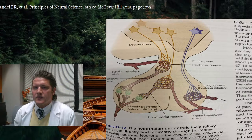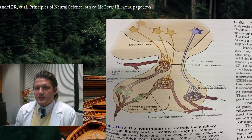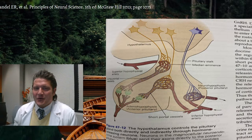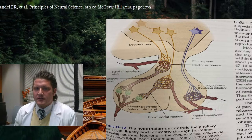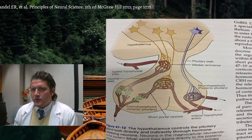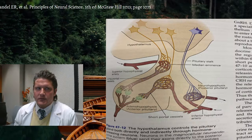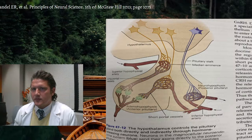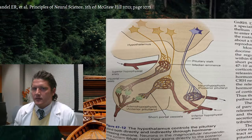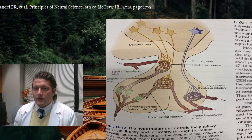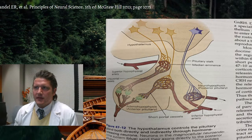Here I have a diagram of the pituitary from the Principles of Neuroscience, fifth edition. You can see there are two portions: the anterior pituitary, referred to as the adenohypophysis, and the posterior pituitary, referred to as the neurohypophysis. The anterior pituitary is responsible for hormones involved with prolactin, growth hormone, your adrenal glands, your thyroid gland, and your gonads — ovaries in females and testicles in males.